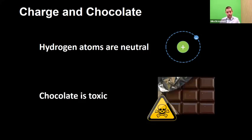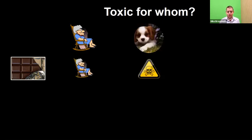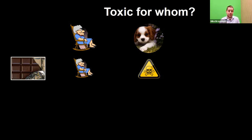Now what happens if I hand you a bar of chocolate and say this chocolate bar is toxic? First of all you might not eat it, but then you might say: for whom is it toxic? The hydrogen atom was neutral for everyone — is this chocolate bar toxic for my grandma? If it's a normal chocolate bar from a shop, the answer is probably no. But it might be toxic for your dog. Your grandma sits there quite happily chomping through chocolate, but your dog should not be given chocolate to eat. So the statement 'this is toxic' depends on who you are talking about.